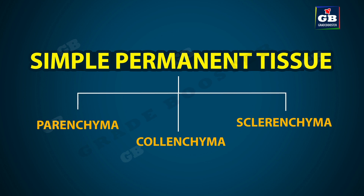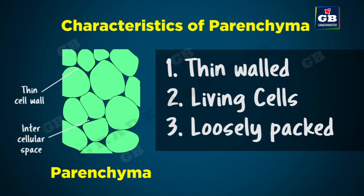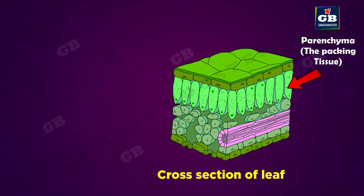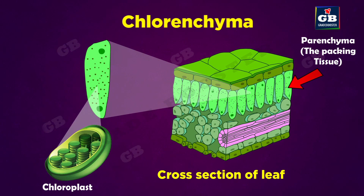The cells of parenchyma tissue are thin-walled, living cells. They are loosely packed, and thus there are large spaces between the cells of this tissue. The cells of parenchyma tissue present in the leaf consist of chloroplasts and perform photosynthesis; in such cases this kind of parenchyma is called chlorenchyma.